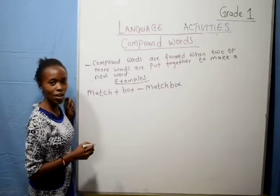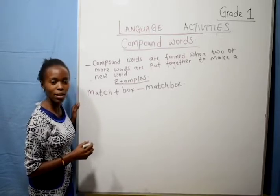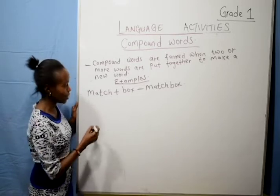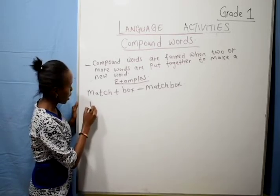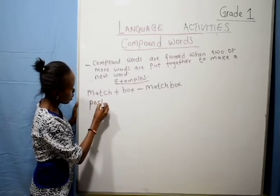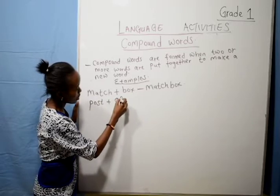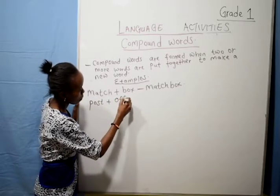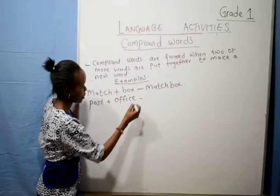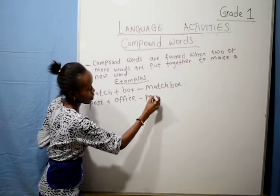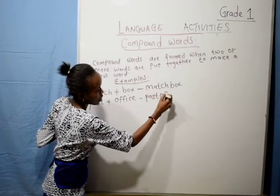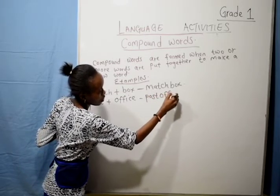Who can try another compound one? Very good. We have post, office — they will give us post office. They will give us post office.